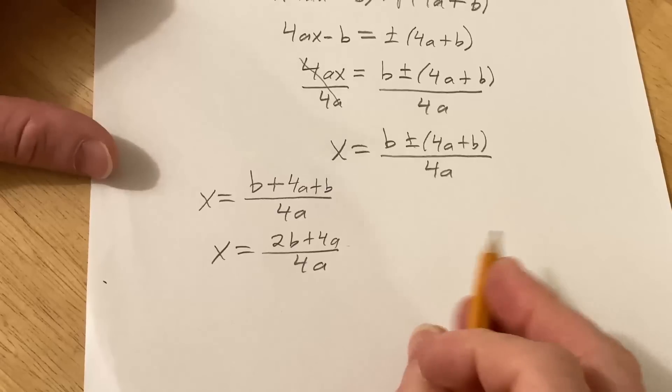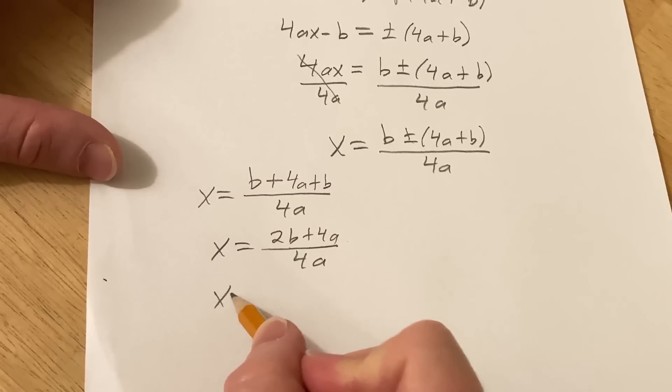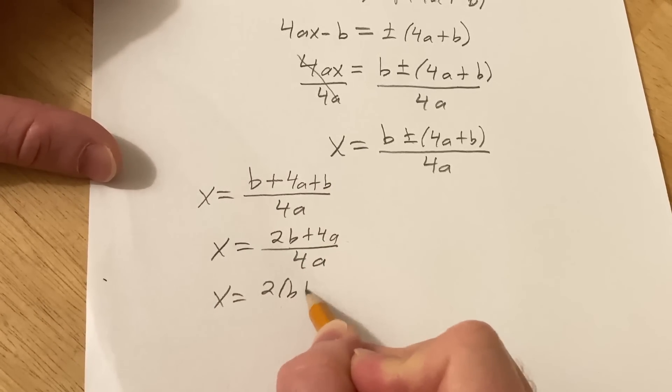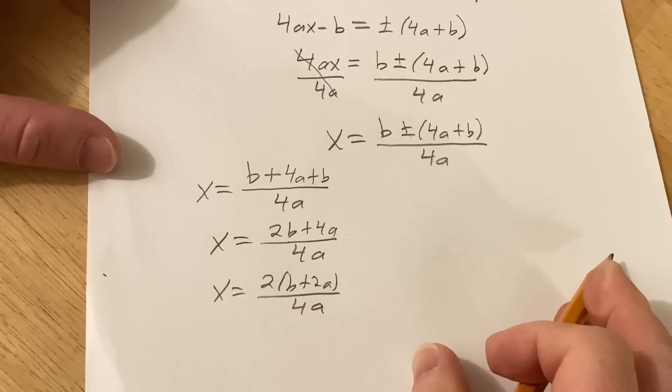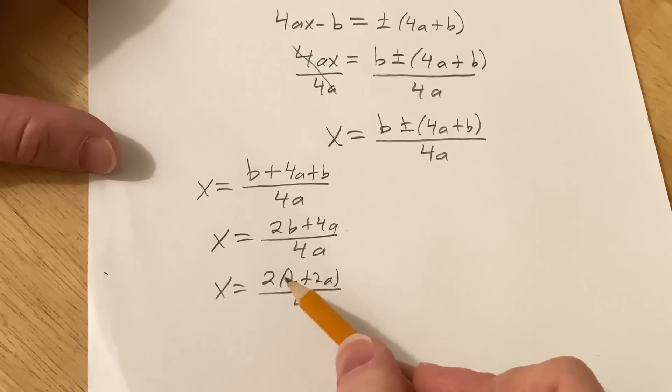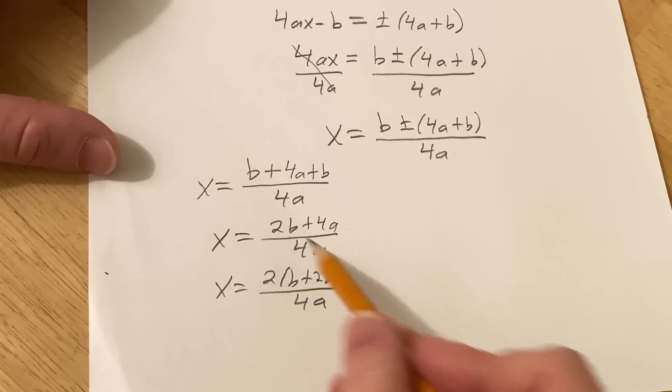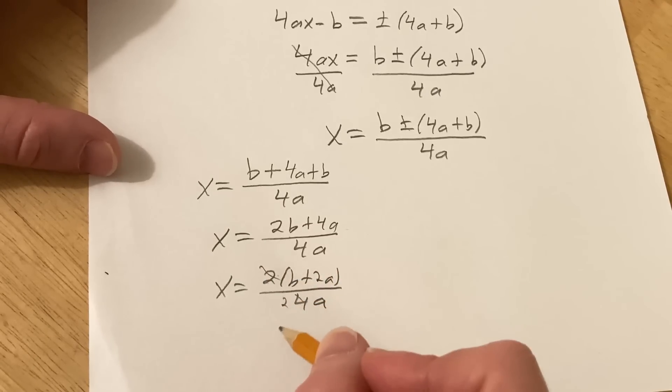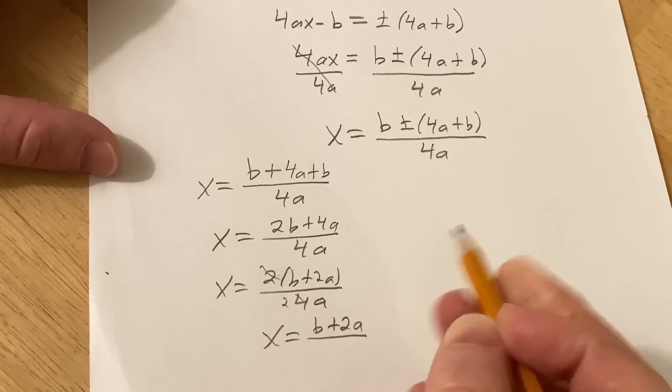So that's just going to be x equals 2b plus 4a over 4a. I guess we can pull out a 2 here. So we can do x equals 2b plus 2a over 4a. Pulling out a 2. 2 times b is 2b. 2 times 2a is 4a. It's kind of weird. And then this is just going to be a 2. So x equals b plus 2a.